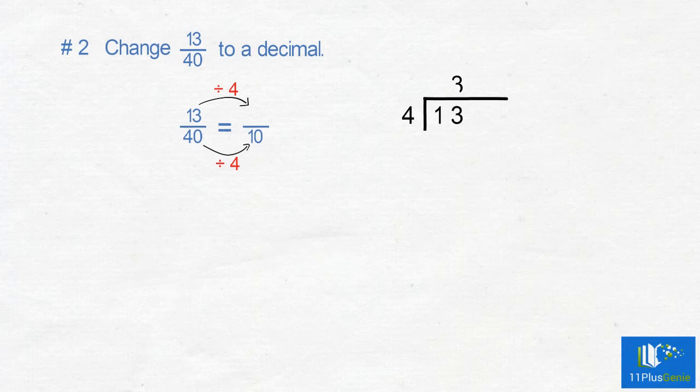4s into 13 is 3 with a remainder of 1. We put down a decimal point and add a 0. We now carry the 1 over to the 0. 4s into 10 is 2 with a remainder of 2. We add another 0 and carry the 2 over. 4s into 20 is 5.